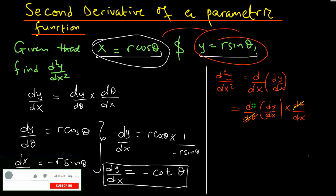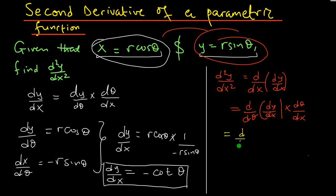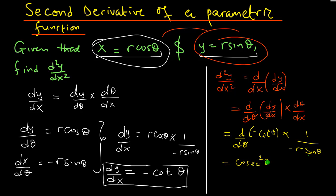So I'll take the derivative with respect to theta of negative cotangent of theta, then multiply by d theta over dx — which is 1 over negative r sine of theta, the reciprocal of dx over d theta. The derivative of negative cotangent of theta is cosecant squared of theta. Multiplying through gives us the second derivative as negative 1 over r times cosecant cubed of theta.